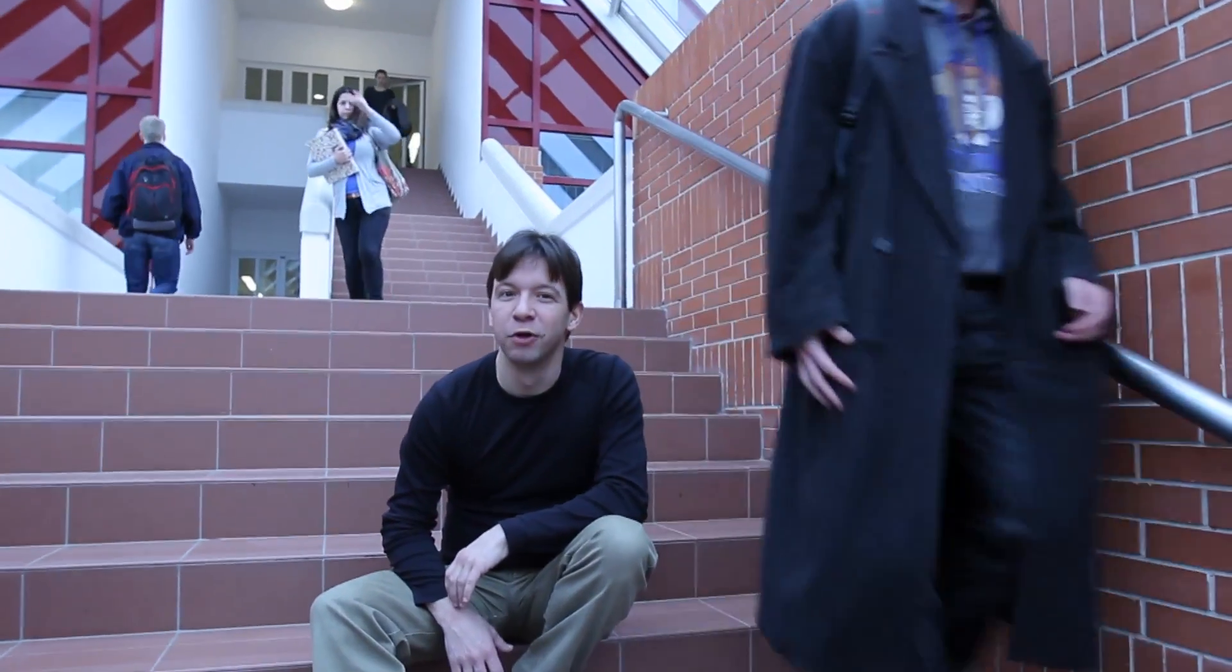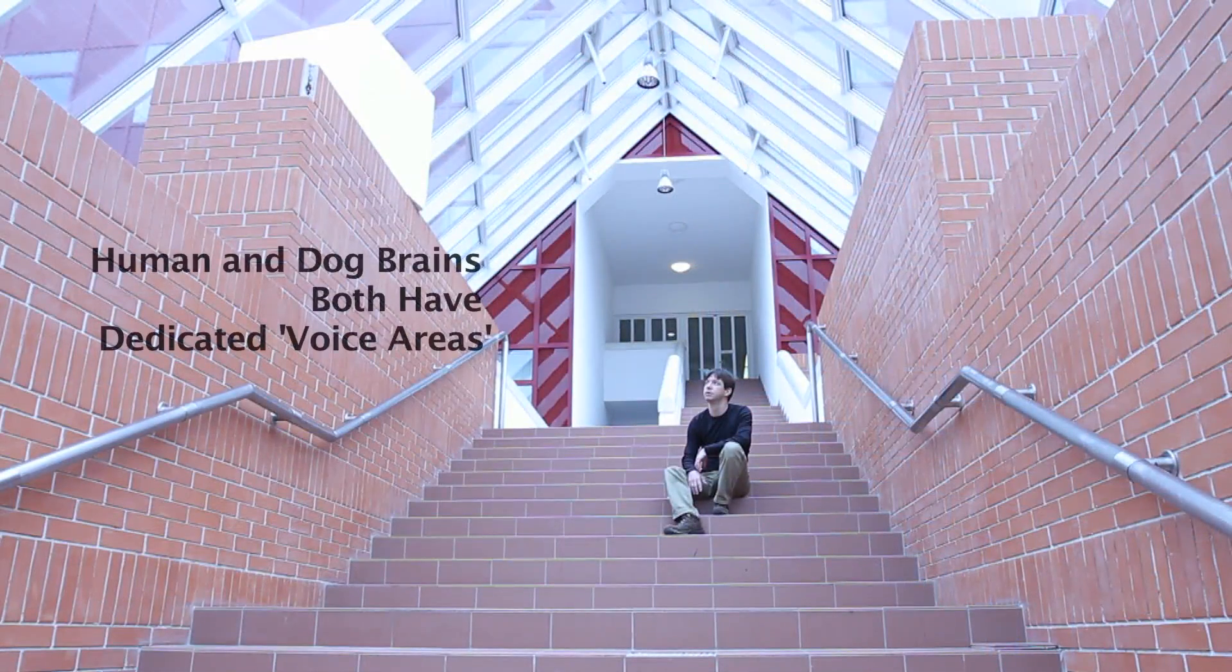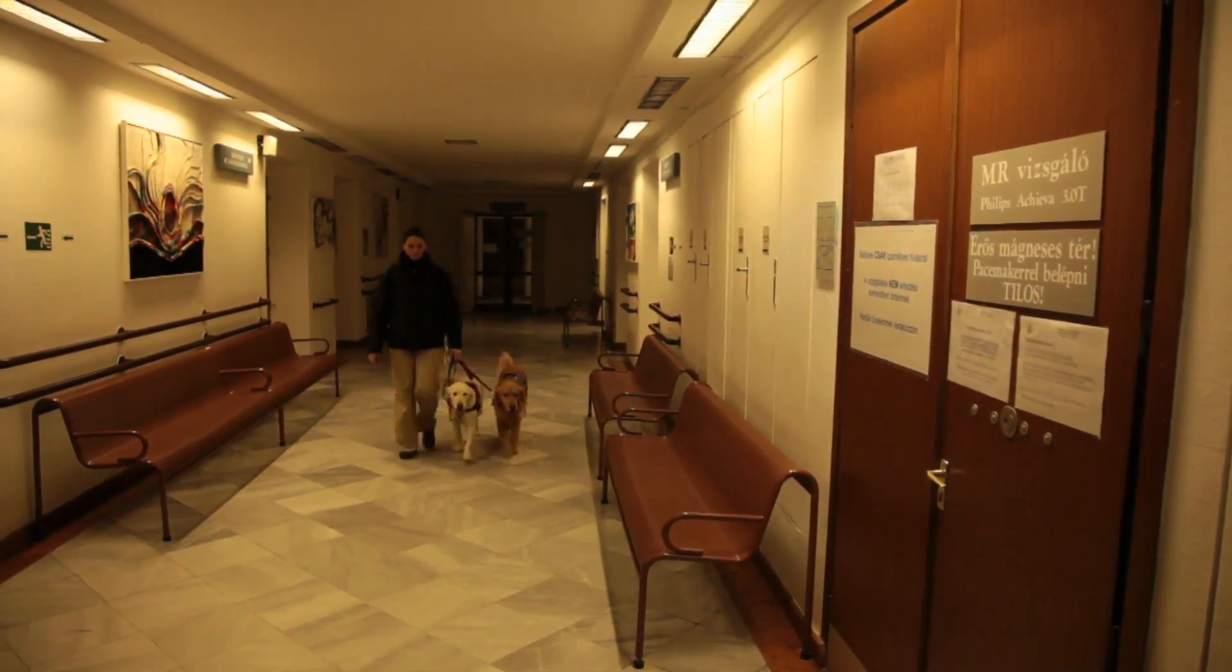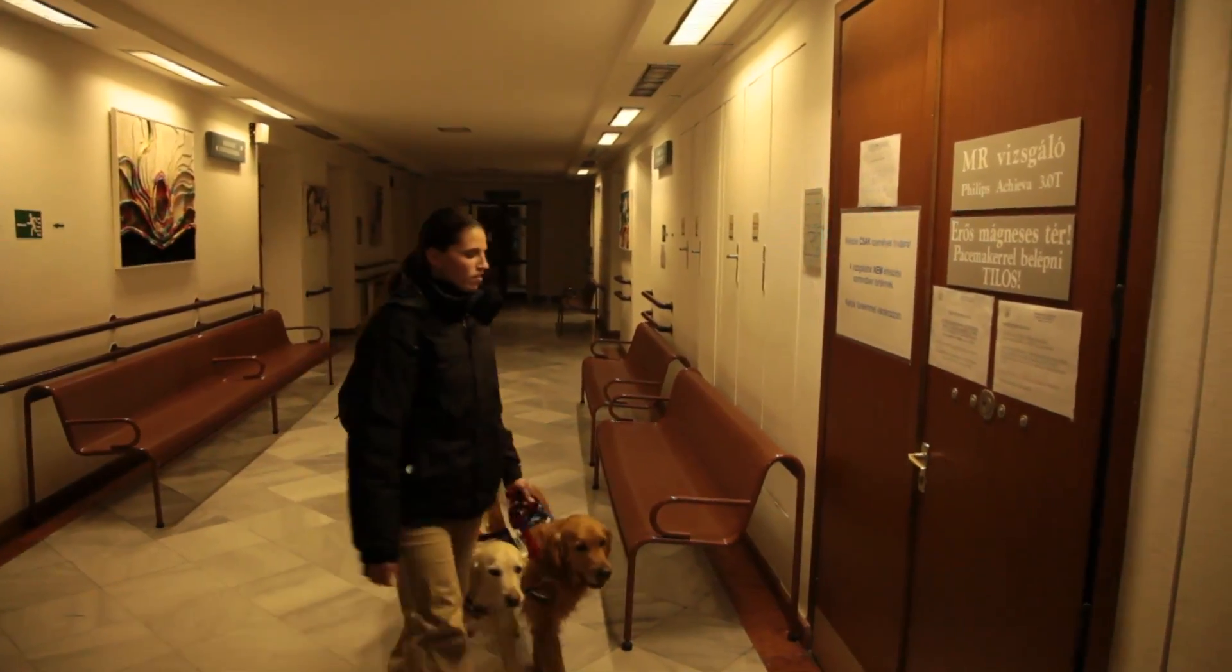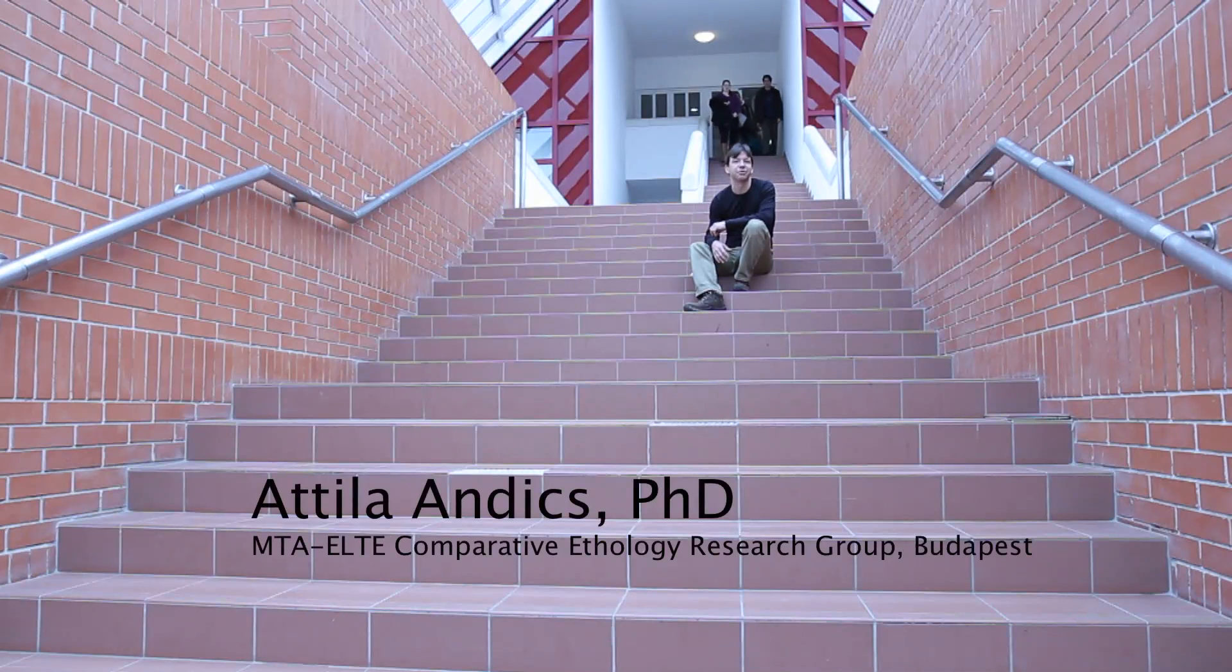Our social environment is full of voices. An important function of the auditory brain is to process who gives the sound and how he or she might feel. No surprise that the human brain is specially tuned to voices, and why would it be any different for other animals?